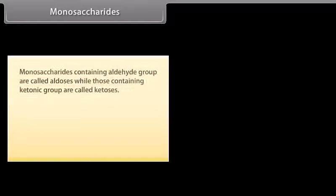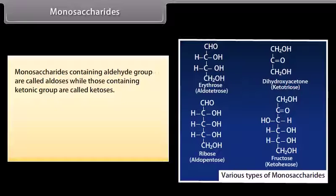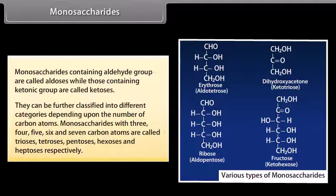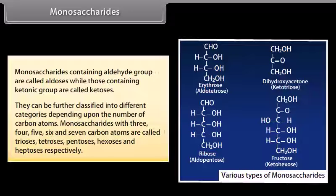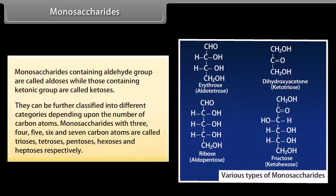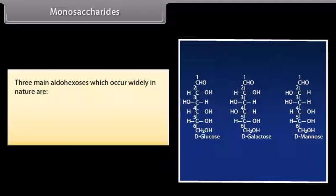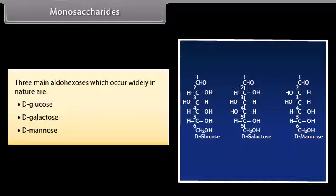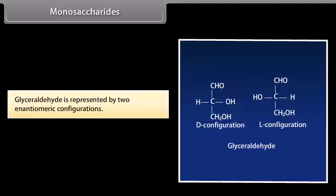Monosaccharides containing aldehyde group are called aldoses, while those containing ketonic group are called ketoses. They can be further classified into different categories depending upon the number of carbon atoms. Monosaccharides with three, four, five, six and seven carbon atoms are called trioses, tetroses, pentoses, hexoses and heptoses respectively. Three main aldohexoses which occur widely in nature are D-glucose, D-galactose and D-mannose. The letter D before the name of monosaccharides represents the configuration as derived from glyceraldehyde, which is represented by two enantiomeric configurations.